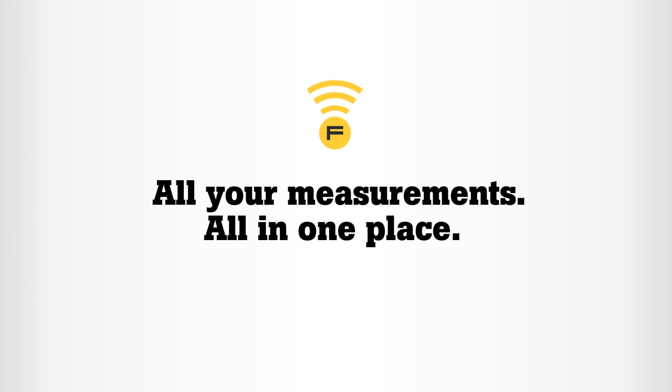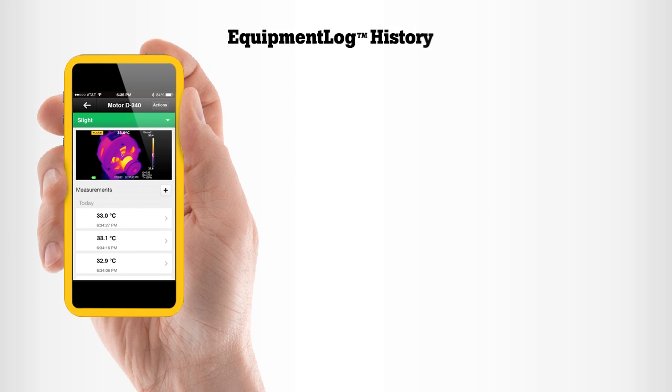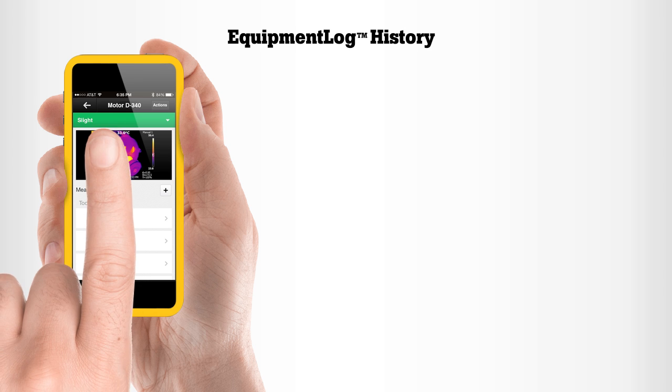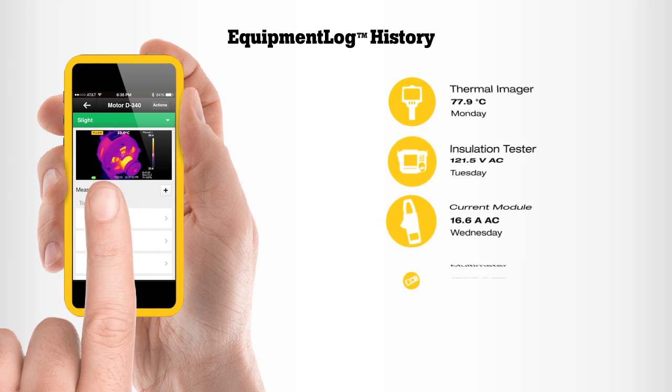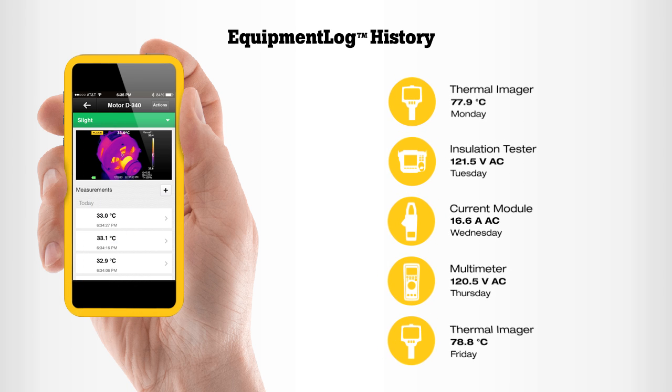Equipment log history allows you to assign those measurements to specific equipment, creating a history of test measurement data that will help you make decisions and identify issues.